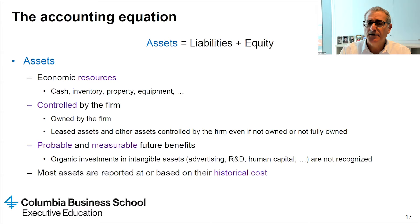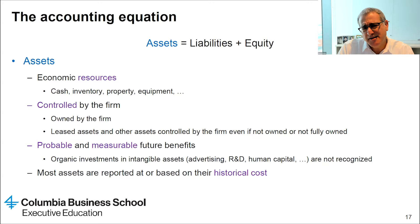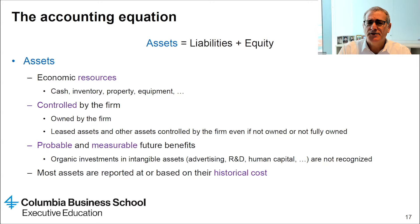To have a resource reported as an asset on the balance sheet, two requirements must be met: the probability that we will benefit from the resource must be relatively high, and we must be able to measure the magnitude of the benefits or cash flows. When these criteria are not satisfied, we don't report an asset. As a result, many important resources are omitted — for example, research and development expenditures are not reported as assets due to too much uncertainty about the benefits.